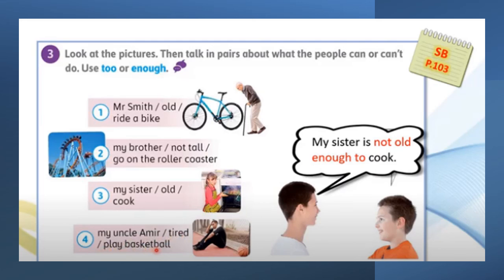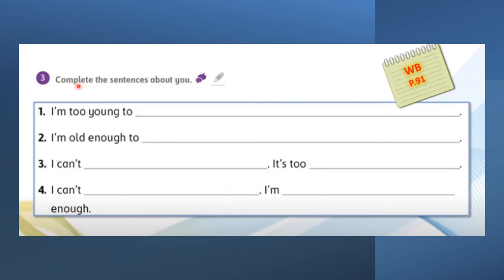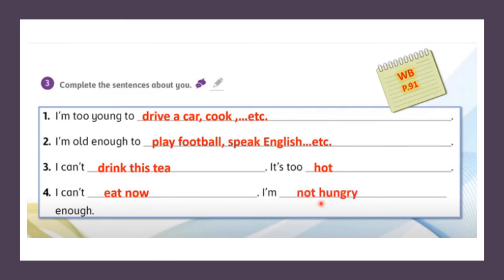Now let's go to activity 3 in workbook page 91 — complete the sentences about yourself. For example: 'I am too young to drive a car' or 'I am too young to cook.' You can write about yourself: 'I am old enough to play football' or 'to speak English.' 'I can't drink this tea — it's too hot.' 'I can't eat now — I am not hungry enough.'